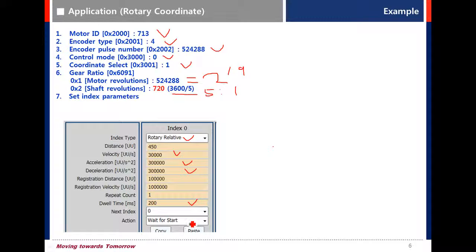Action, wait for start. If the action of the index is set as wait for start, the next index is executed by start signal after the relevant index operation is completed. The index which is executed on start signal is determined by the ICA025 regardless of the set value of next index. So index 0 is repeated.